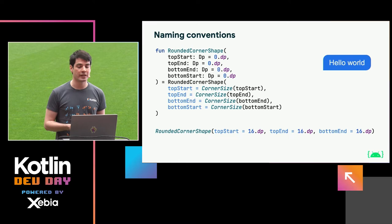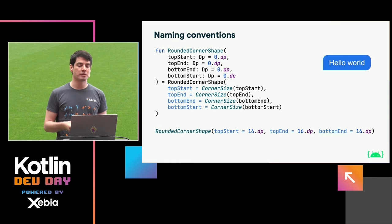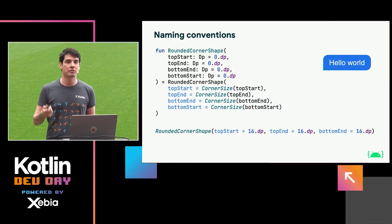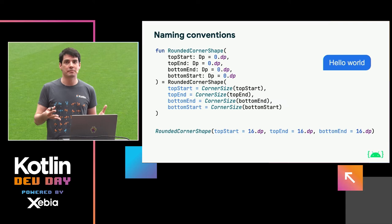The use of default values that allow you to customize things but don't mandate that you provide those parameters is really widespread in Compose. There are composable functions that have like a dozen parameters, but only maybe one or two of them are required. Everything else, if you do want to customize it, can be passed in as named arguments — which is a really core part of Kotlin. It's a simple thing that all Kotlin functions are capable of, but it is used really heavily in Compose.